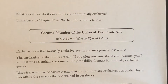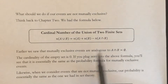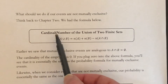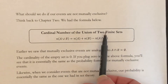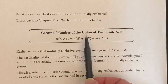This is part 3 of section 11.6. So what do we do if our events are not mutually exclusive? And that's going to happen. So if we think back to chapter 2, we had this formula where we were trying to find out the number of elements in a set, and union was 'or.'